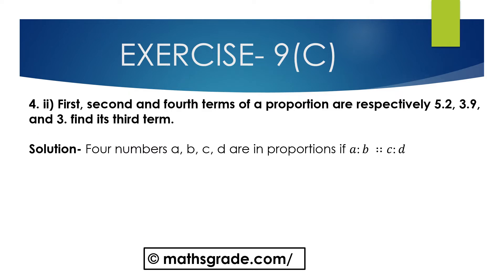Now question number 2. The first, second and fourth terms of a proportion are respectively 5.2, 3.9 and 3. Find its third term.